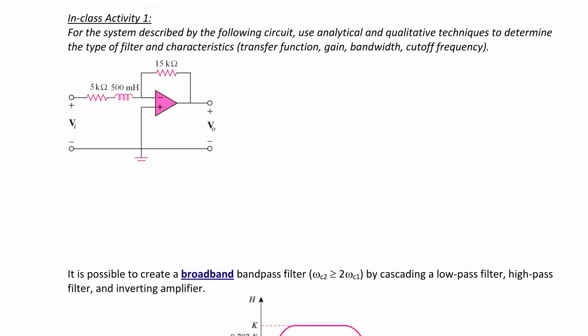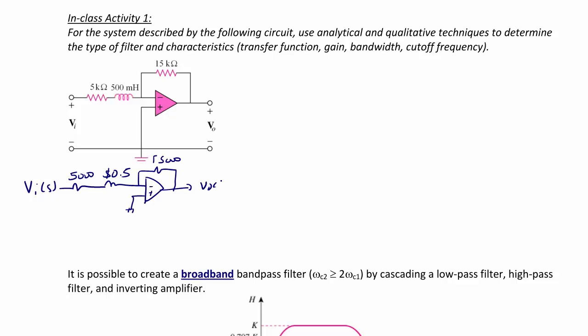For the system described by the following circuit, use analytical and qualitative techniques to determine the type of filter and characteristics such as transfer function, gain, bandwidth, and cutoff frequency. We redraw this circuit in the frequency domain: we have input Vi(s), a capacitor of 5,000, an inductor of 0.5·s, the positive terminal tied to ground, a feedback resistor of 15,000, and output V0(s).